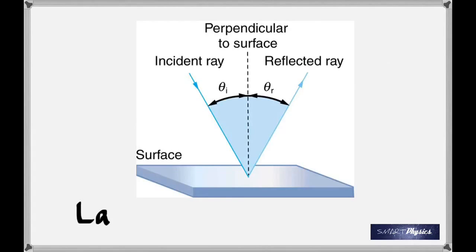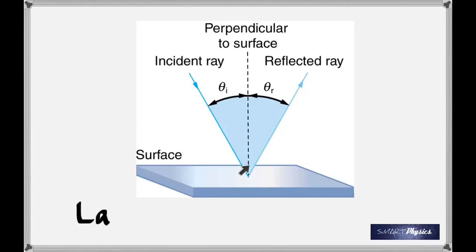You see the incident ray? It is the ray that falls on the surface — that's the surface that reflects light. As you can see, a perpendicular is drawn to the surface. The angle between the incident ray and that perpendicular line is theta i — it's called the angle of incidence.